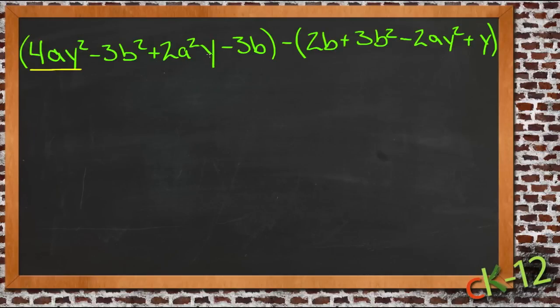We have a 2a squared y here, but that's not the same, because here the a term is squared, and the y term isn't. And the first one, the a squared wasn't, and the y term was. So keep looking to see if there's any others that match.